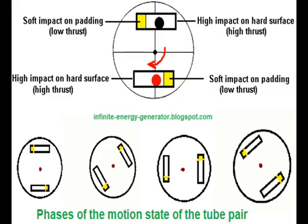Tube design: the tubes housing the rollers require stress-bearing ends to absorb force and soft ends to reduce recoil, ensuring energy is efficiently transferred rather than dissipated. Initial conditions: precise calculations of the starting positions and velocities of the rollers are necessary to establish a self-sustaining cycle. These considerations form the foundation of a mechanism that exploits gravity to generate motion.